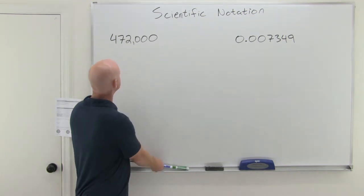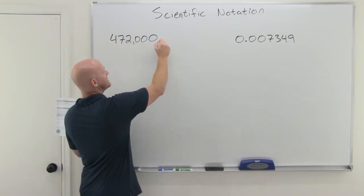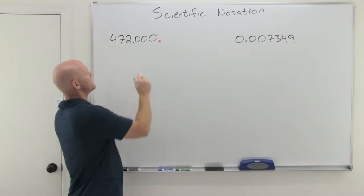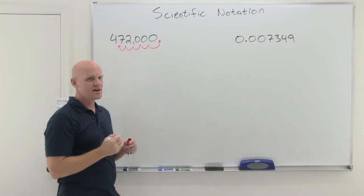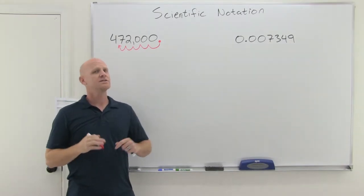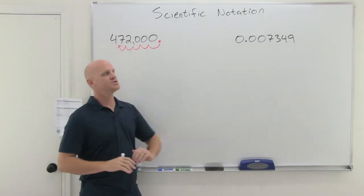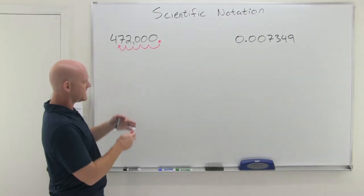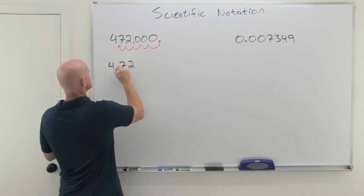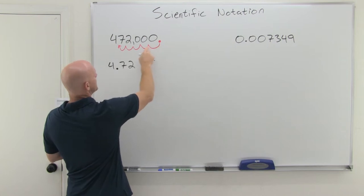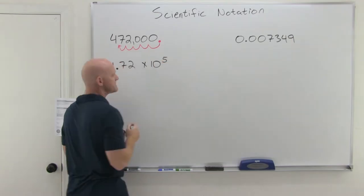So we'll start with a large number here, and we've got a decimal that's not written — it's essentially right there — and in this case, we're going to move that decimal until we've got just one number left of the decimal place. We can write a number in Scientific Notation with more than one number left of the decimal place, but that's not proper. It should be written with just a single digit left of that decimal, so we'll rewrite this as 4.72, and we moved it 1, 2, 3, 4, 5 places — so that's times 10 to the fifth power.